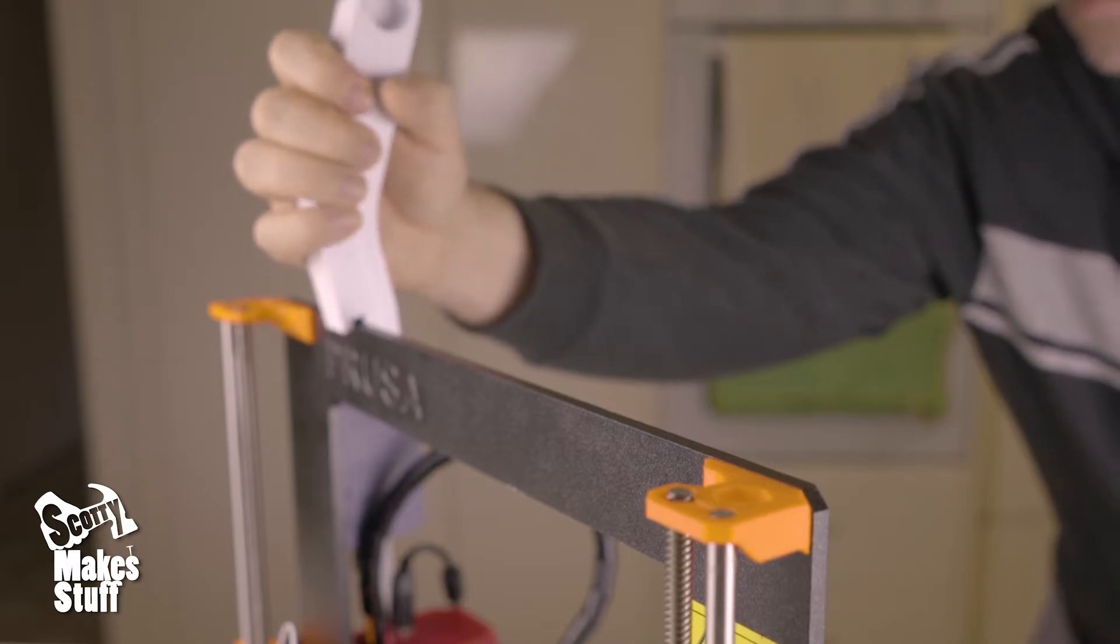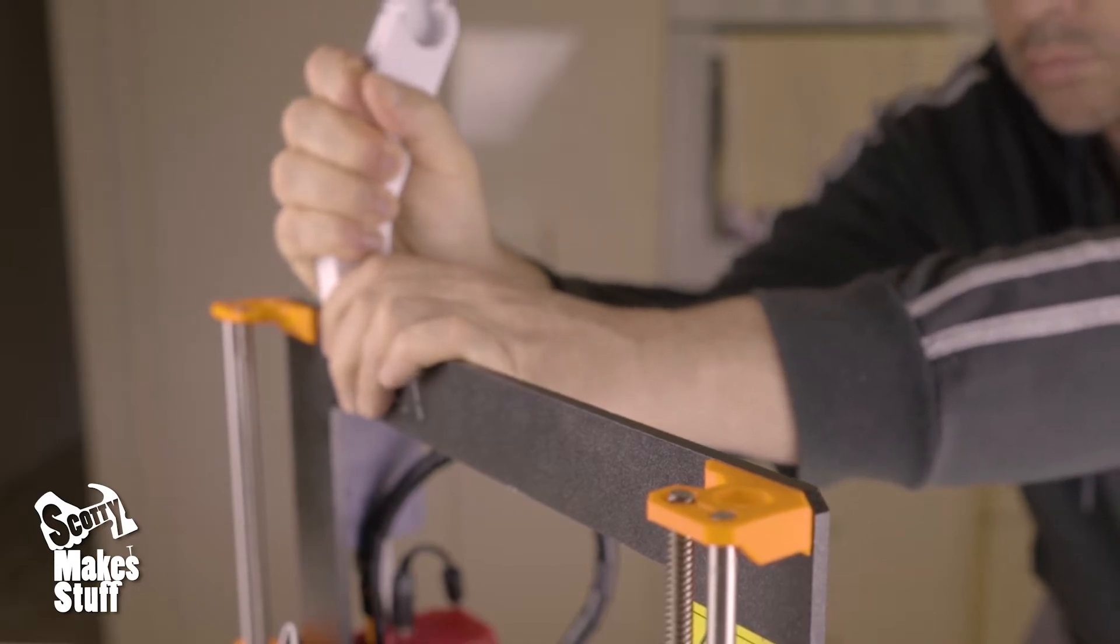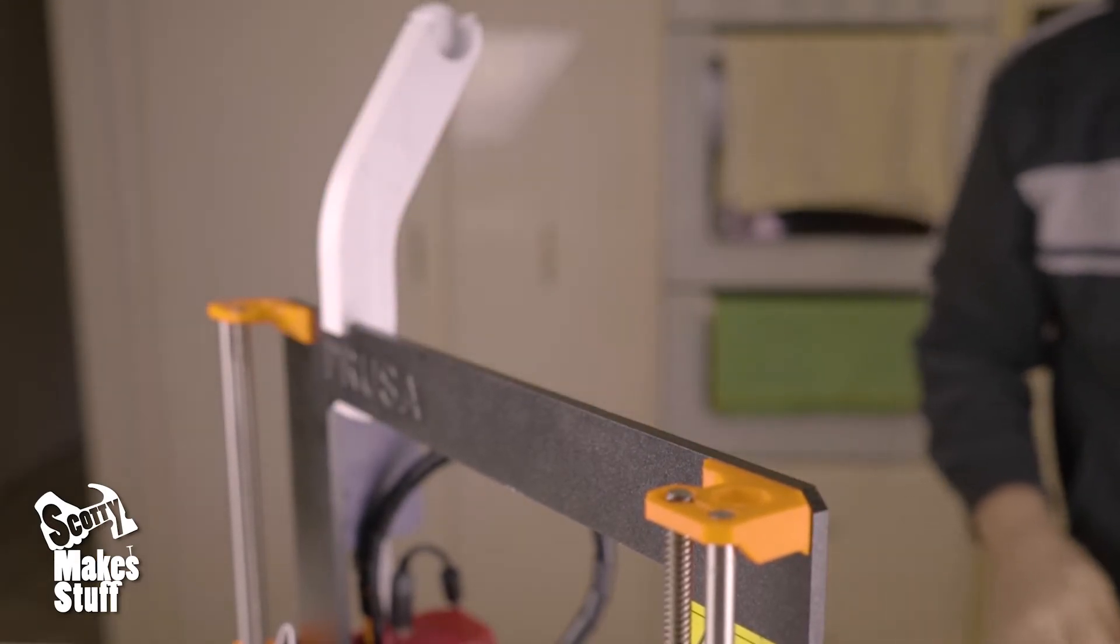When attaching the arms you just need to push them down while wiggling them a little to get them in position before levering them gently until they snap securely onto the frame.